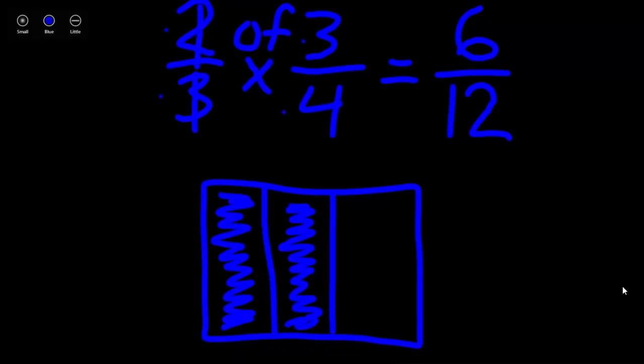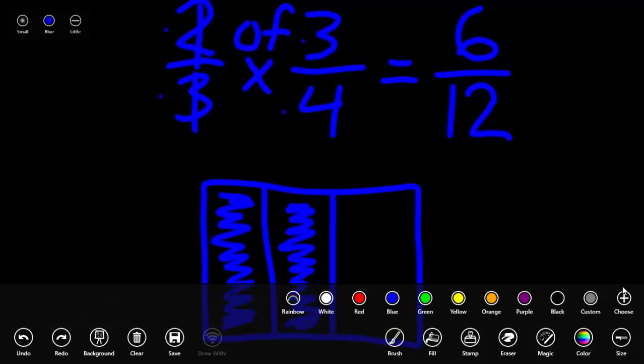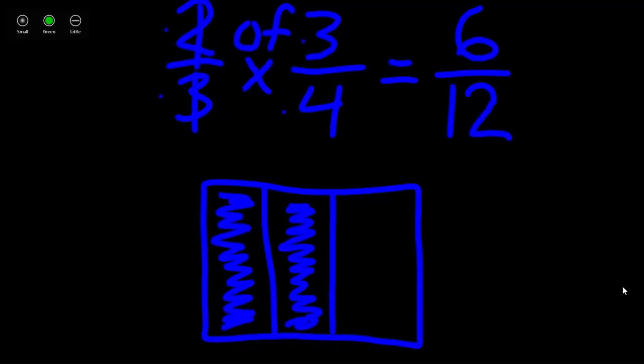Okay, now we're going to look at 3 fourths. Since we represented 2 thirds vertically, we're actually going to represent 3 fourths horizontally. It might help to imagine our square completely empty and to pretend that we hadn't already represented 2 thirds in our square.